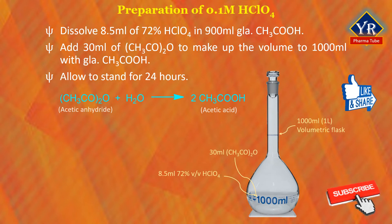Perchloric acid must be well diluted with glacial acetic acid before adding acetic anhydride, because the reaction between perchloric acid and acetic anhydride is explosive.